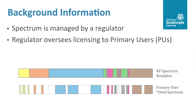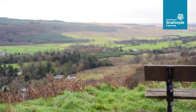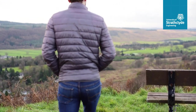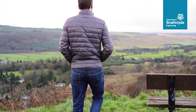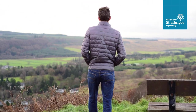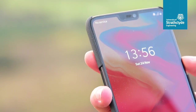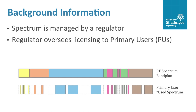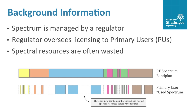Additionally, primary users often choose not to make use of their licensed spectrum in areas where there is no business case for them to deploy their services. For example, there is often very poor cellular coverage in the countryside despite operators owning licenses to transmit at these locations. For these reasons, spectral resources are often wasted.